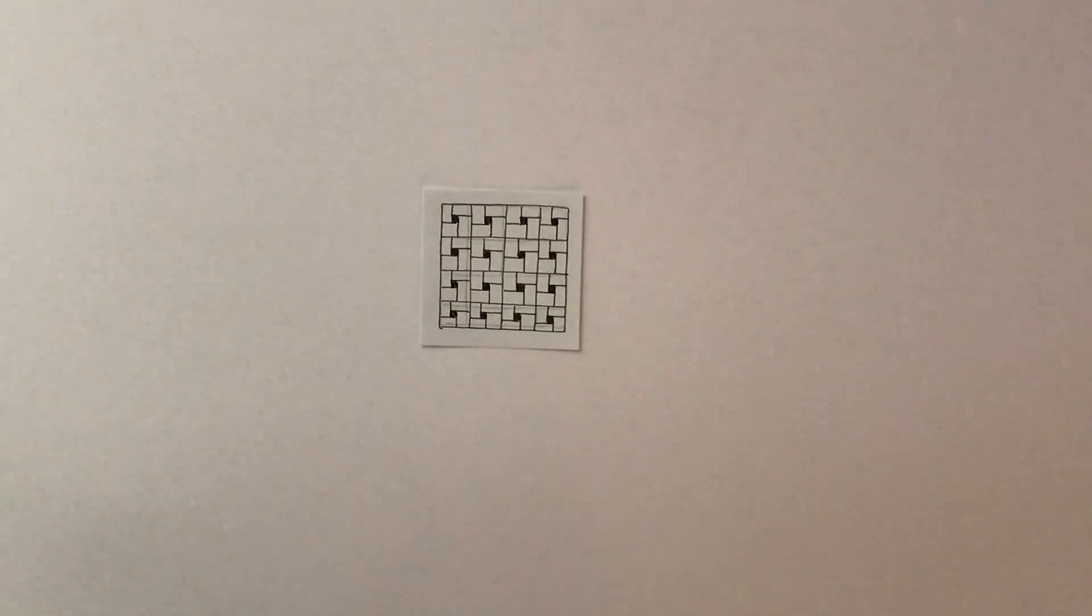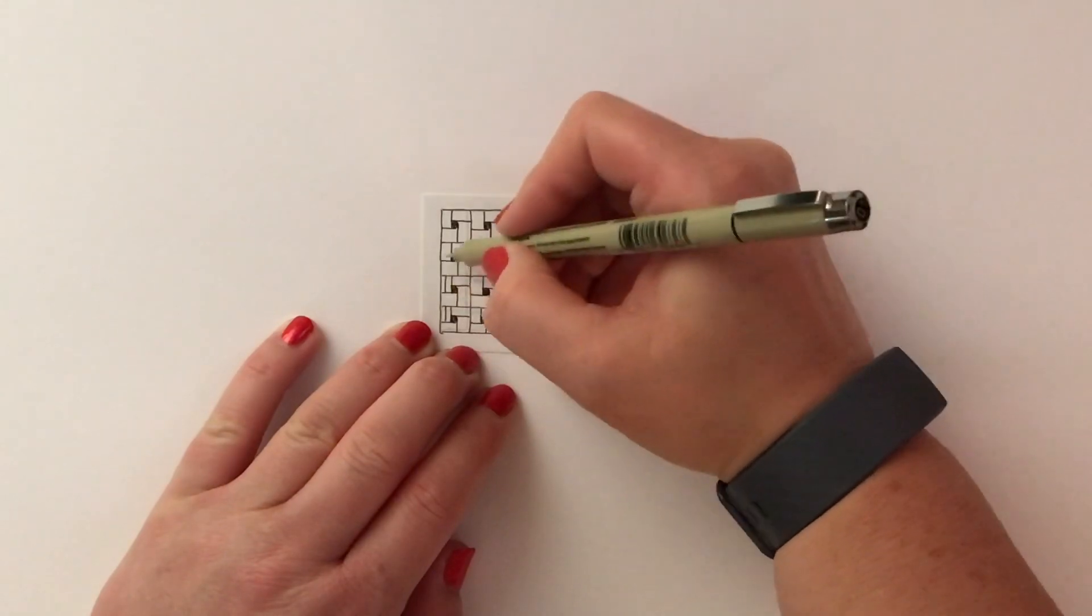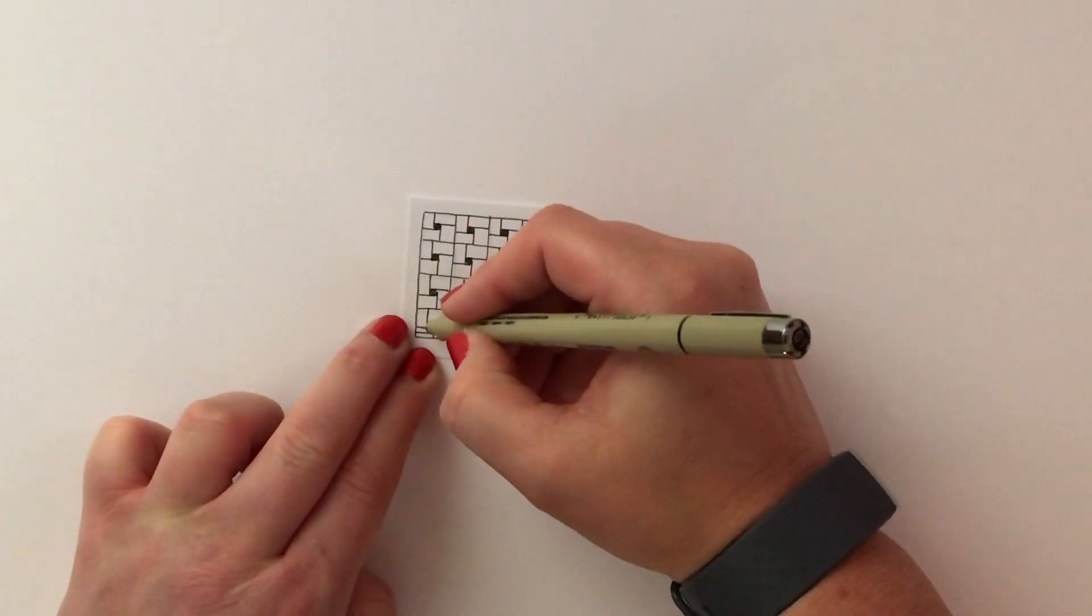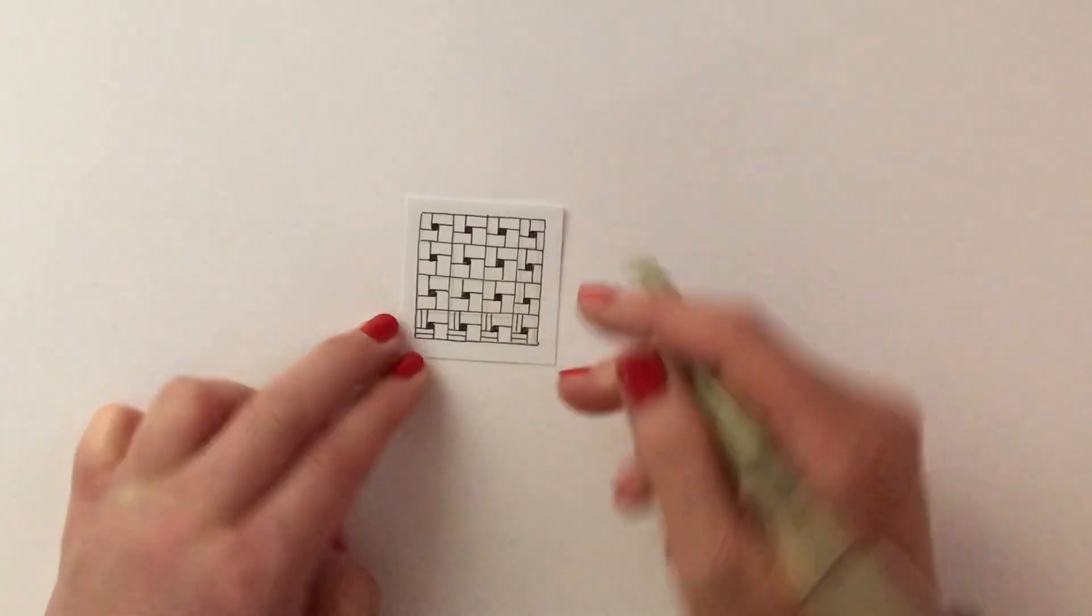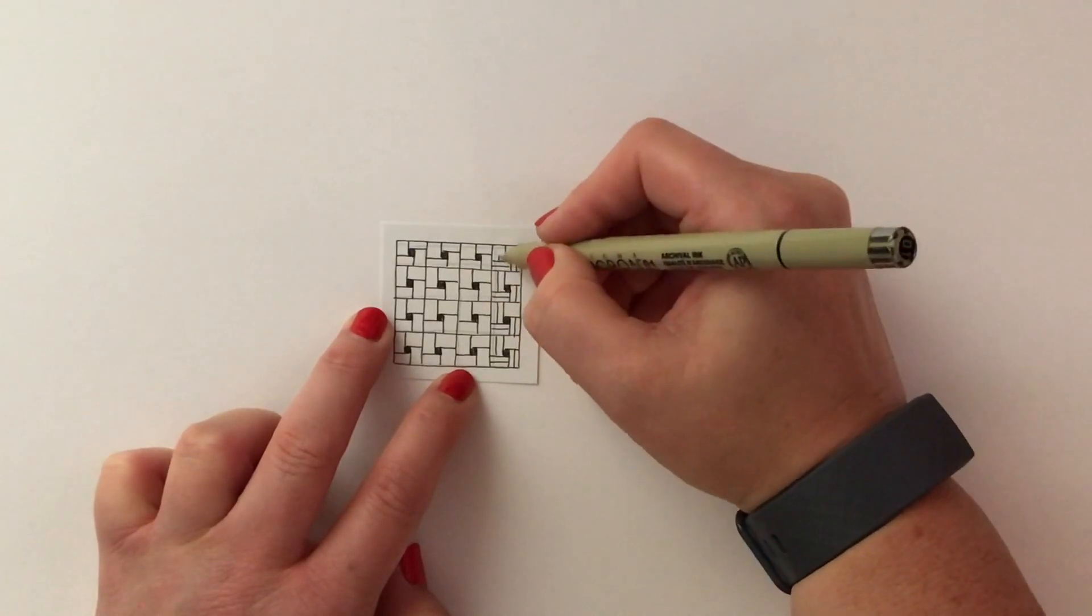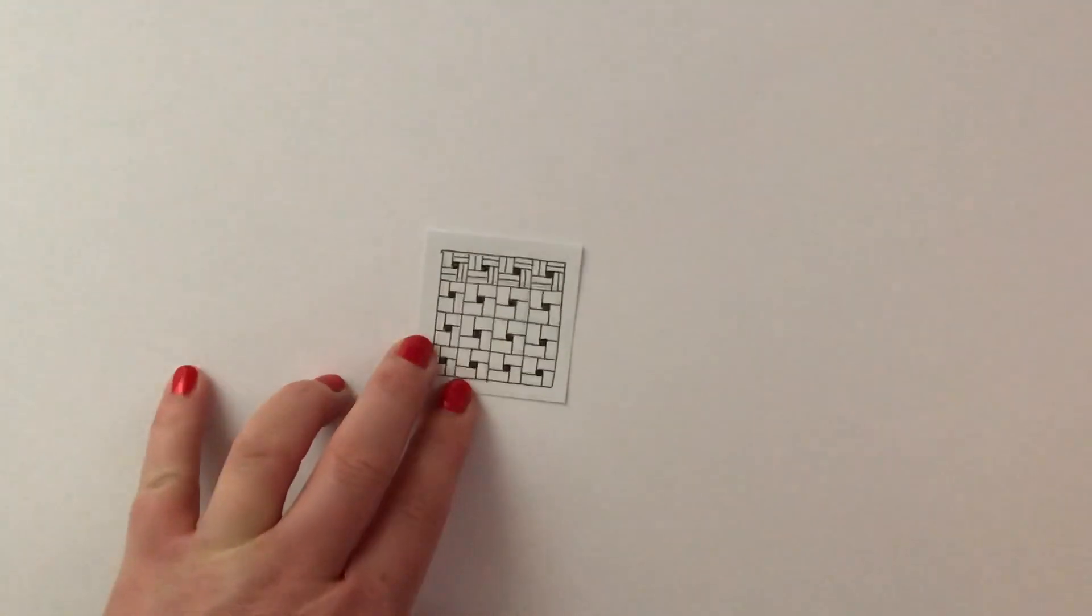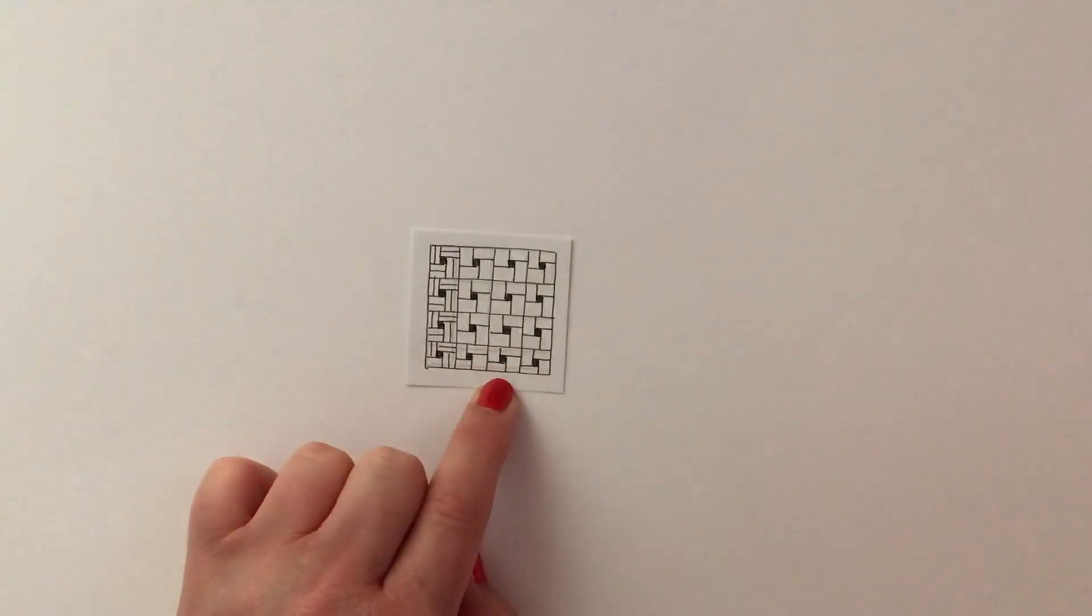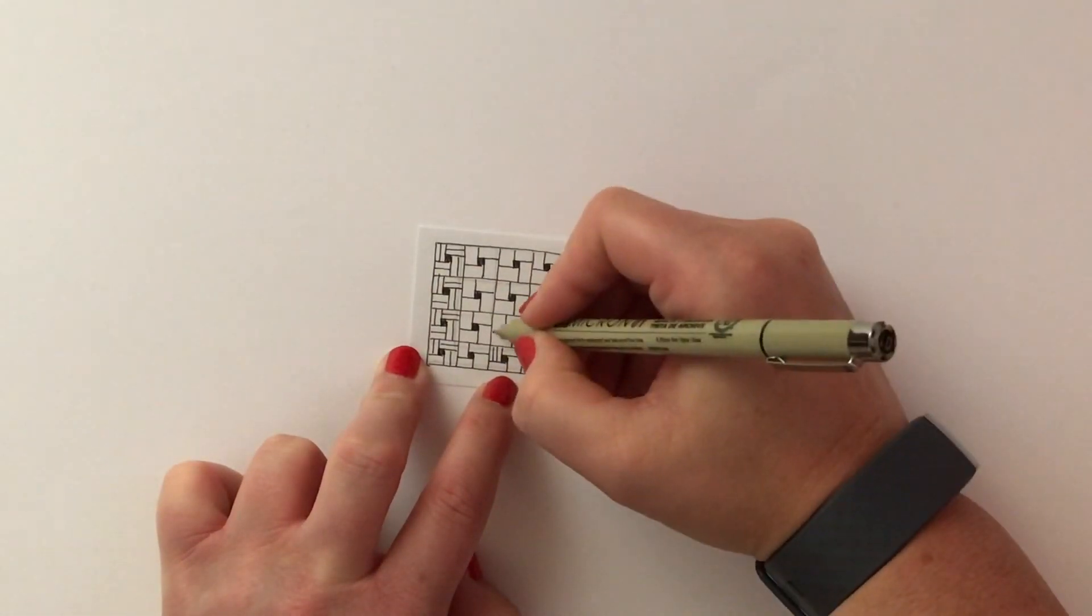That's this tangle that's pretty much finished. Now we've got a couple of options here. We can leave it the way that it is or we can decorate. Decorating is very easy, I'm just going to do the first row and again you'll notice that I'm turning my tile. All I'm doing is putting an extra line down the center.